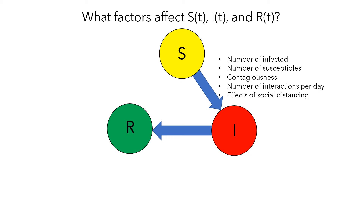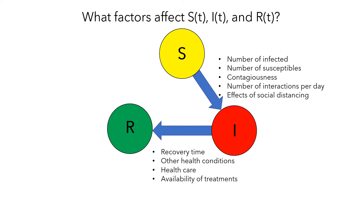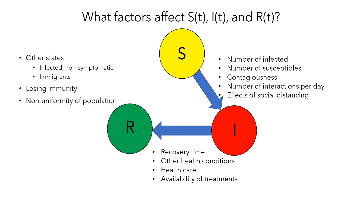Focusing on how quickly the removed population grows: if people recover quickly the removed population will grow quickly, or if people have other health conditions that could slow their recovery. Similarly, if there is good health care or available treatments, the removed population could grow quickly. Other factors students have suggested include states beyond S, I, and R — such as being infected but non-symptomatic, or introducing additional people into the system — different rules for moving between states such as losing immunity, non-uniform population mixing, and quarantine. Different models can take different things into account, but in our model we'll keep things simple and not account for some of these other factors.